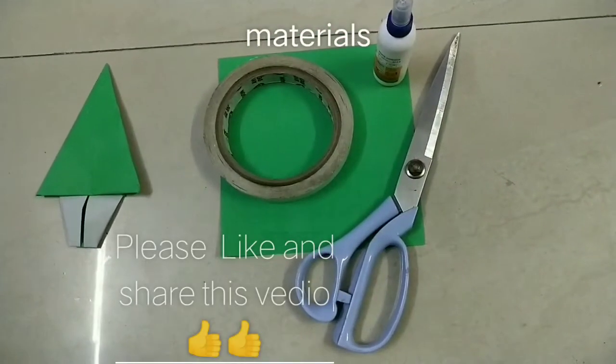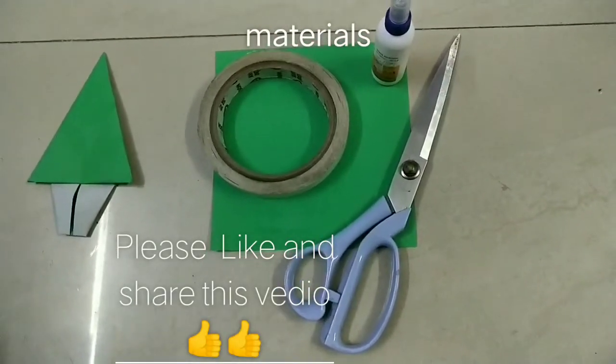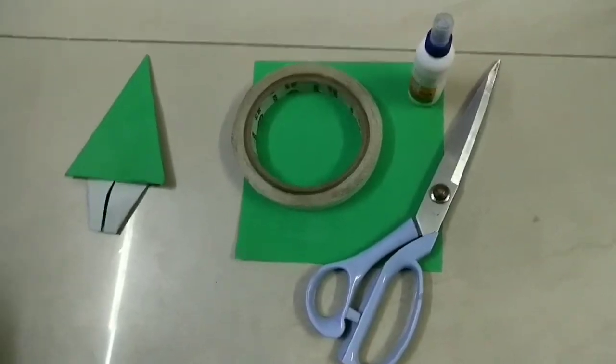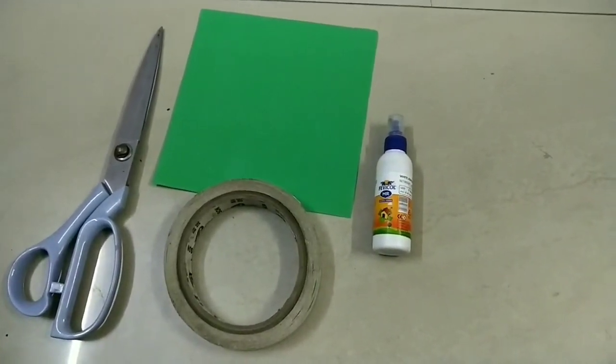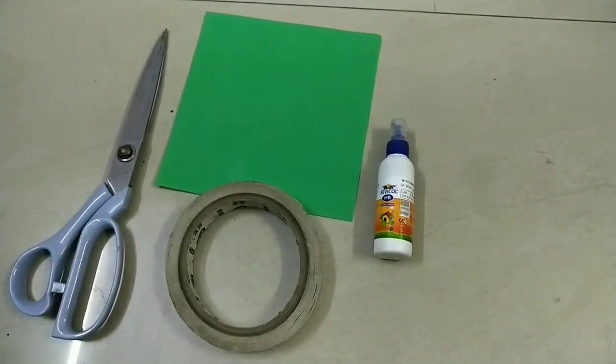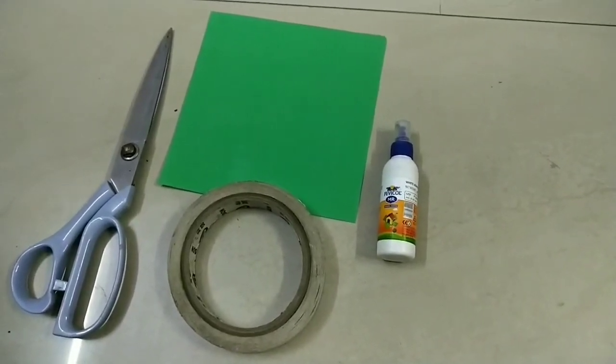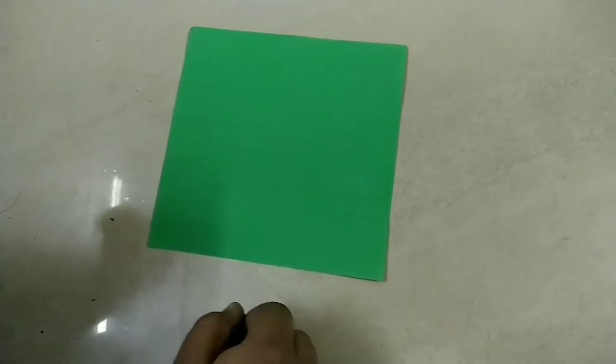My channel Craft Man. Today we are making this origami Christmas tree. We need scissors, double tape, Fevicol, and an origami sheet. I have taken this green color origami sheet.